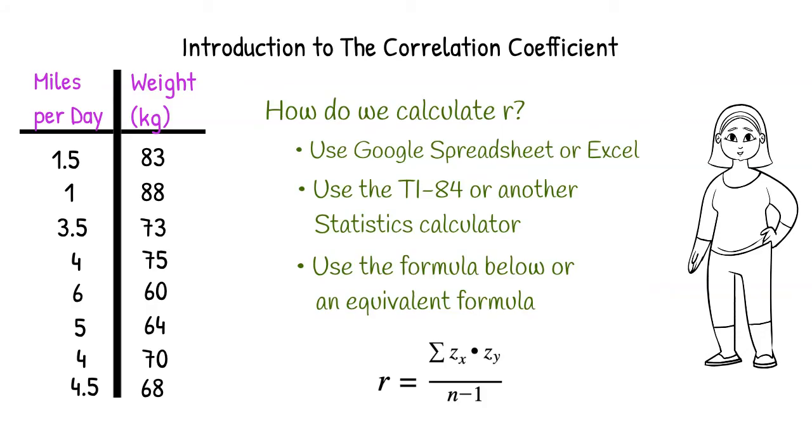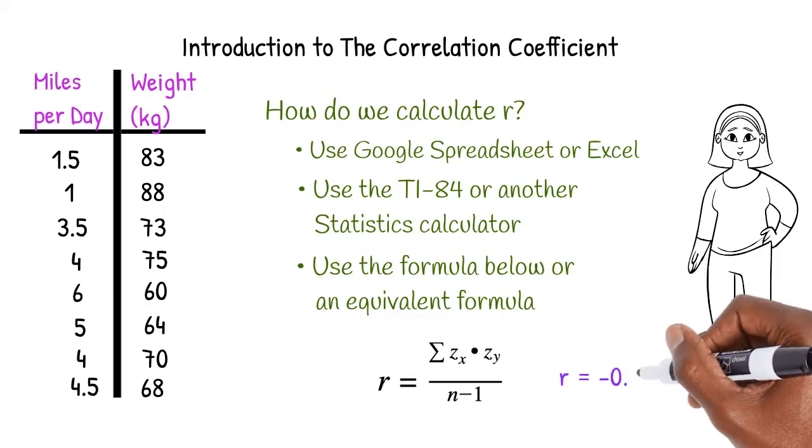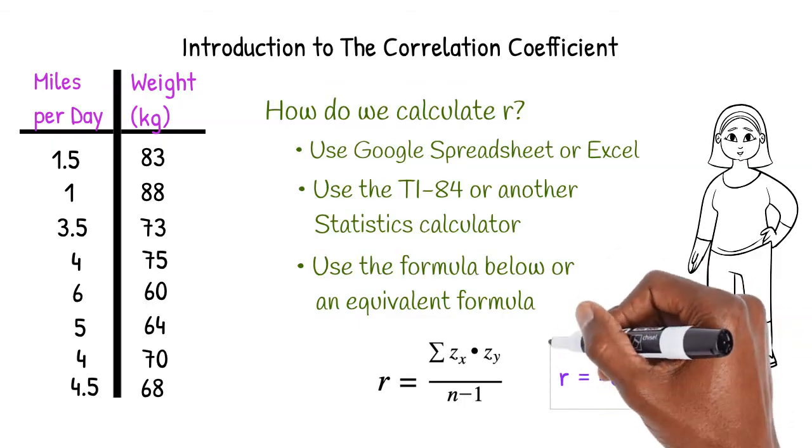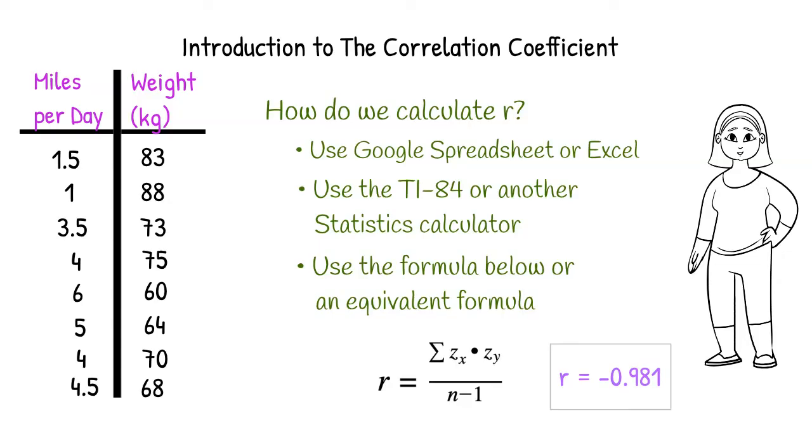All methods, if used correctly, will get you the same correlation coefficient value. By using my TI-84, I got the correlation coefficient for this data to be negative 0.981. I'll show you how to get that number in our next video.